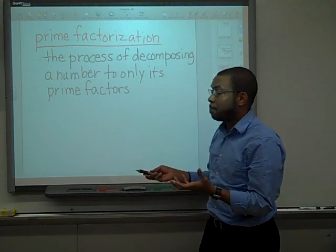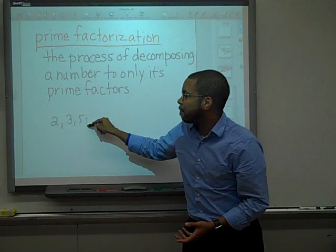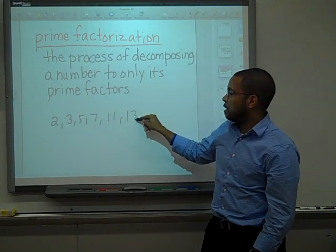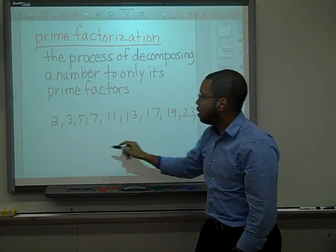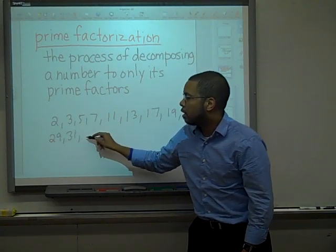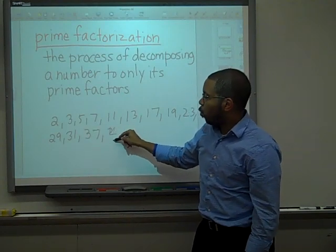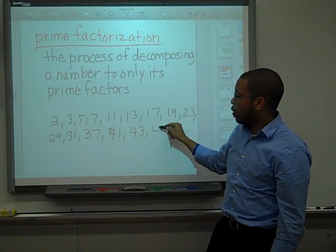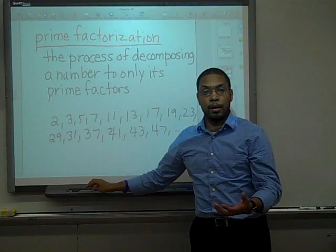The prime numbers are 2, 3, 5, 7, 11, 13, 17, 19, 23, 29, 31, 37, 41, 43, 47, and so on — they continue on.